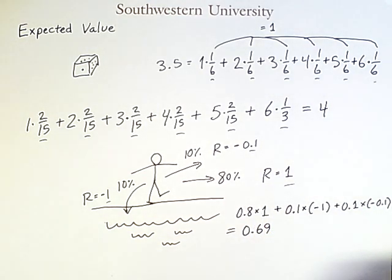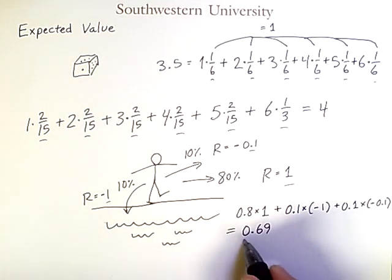So in this case, the expected value of me showing off is 0.69.